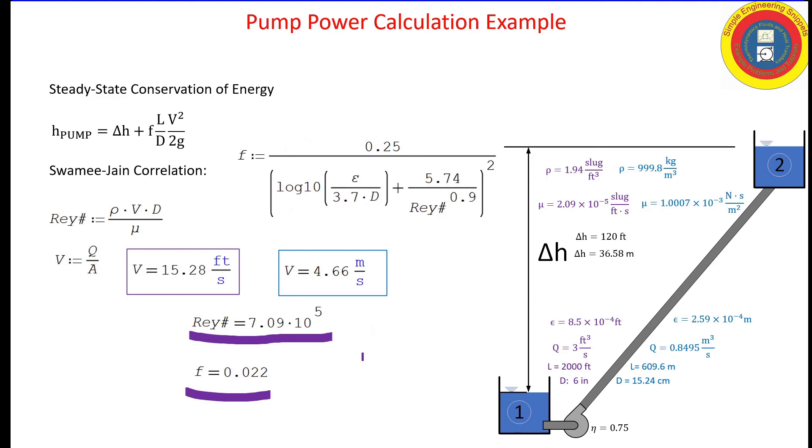Plugging all those values into the Swamy-Jain correlation, we get friction factor is equal to 0.022. That is a realistic friction factor. If it came out to be 0.2, I think that would be too high. 0.002 would be too low. So this does pass the sanity check.